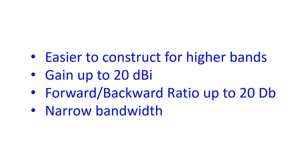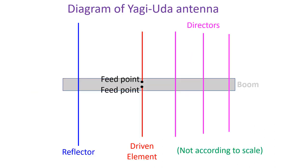The bandwidth of Yagi-Uda antennas is relatively narrow, with a narrow range of frequencies within a band at which it has good gain and operable feed point impedance. The driven element or radiator can be a simple dipole with two quarter-wavelength rods connected to either conductor of the feed line.